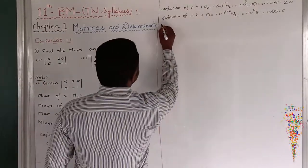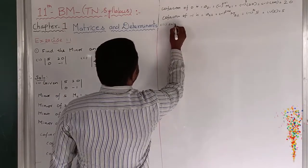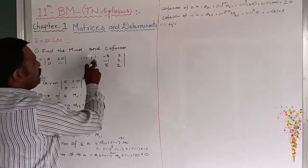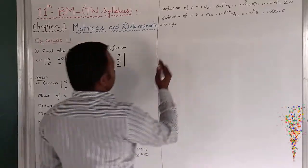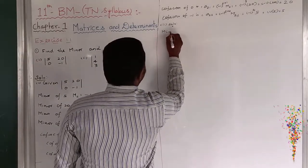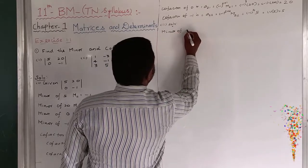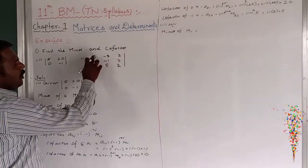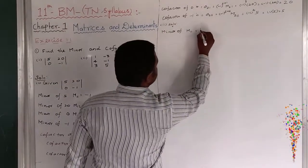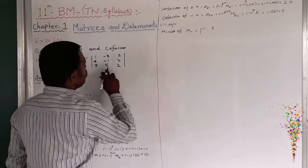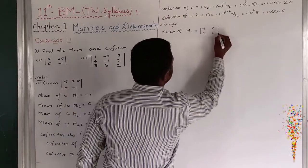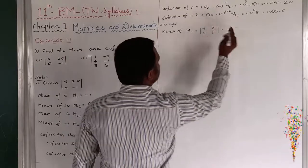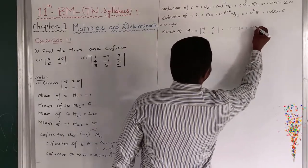Now the second solution. Given the 3 by 3 determinant: 1, minus 3, 2; 4, minus 1, 2; 3, 5, 2. First I want to find out the minor. M11: remove the first row and first column. The remaining is minus 1, 2, 5, 2. So the product terms are: minus 1 × 2 = minus 2, and 5 × 2 = 10. Therefore M11 = minus 2 minus 10 = minus 12.